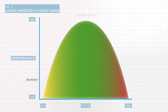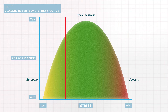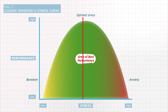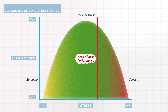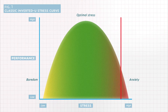This familiar-looking curve was developed back in 1908. It shows how a little bit of stress serves to keep you engaged in a task, and performance increases — to a point. Higher levels of stress on the right side of the curve progress beyond a threshold, eventually causing performance to decline.